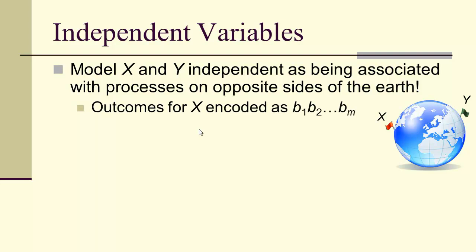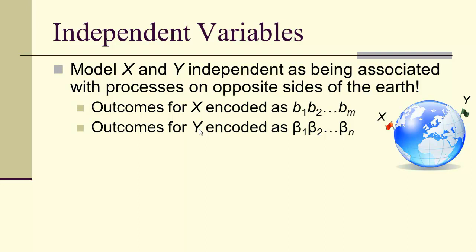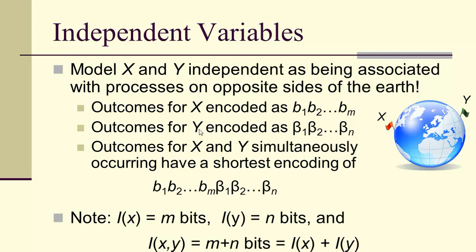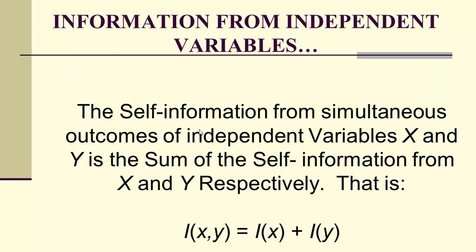If the outcomes of x can be encoded as b_1 through b_m and the outcomes of y as β_1 through β_n, what is the shortest encoding for both simultaneously? Since they're independent, the b's change independently of the β's, so the best we can do is concatenation. If the self-information of x is m bits and of y is n bits, then b_1…b_m concatenated with β_1…β_n is m+n bits. Therefore I(x, y) equals the sum of the two self-informations.